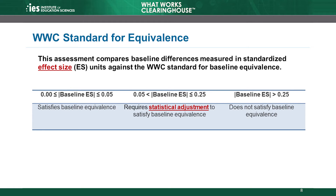The WWC measures the differences between the intervention and comparison groups on a baseline characteristic using a standardized mean difference called an effect size. The effect size is expressed in standard deviation units, based on the variation of the baseline measure in the analytic sample. The WWC standard for baseline equivalence establishes the relationship between effect sizes and the three possible equivalence results.